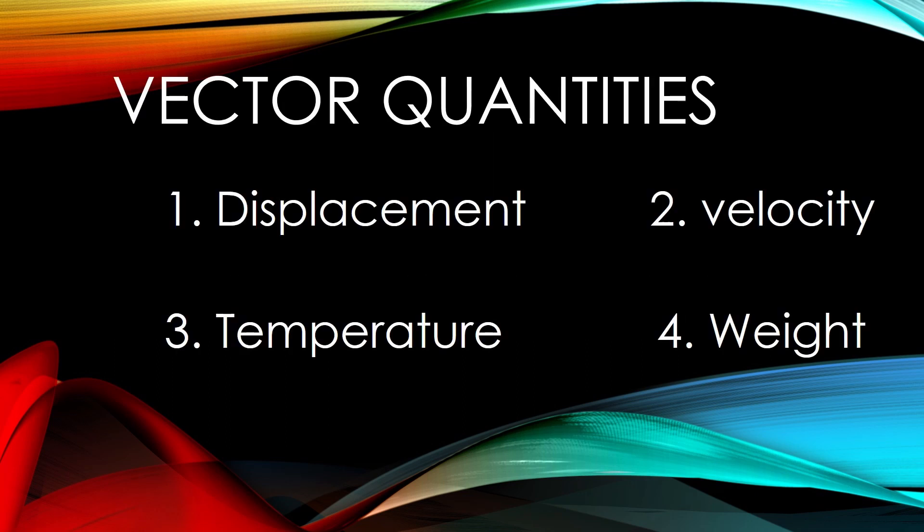Temperature is a scalar quantity. Displacement is defined to be the change in position of an object. Displacement is a vector quantity because it has magnitude along with direction.